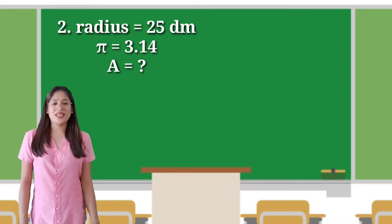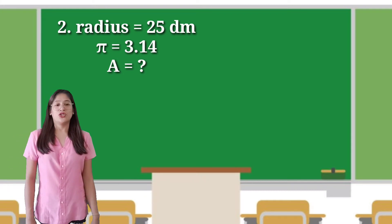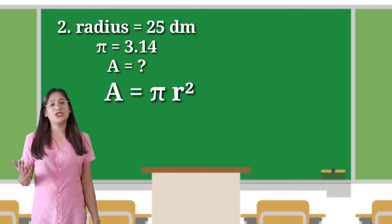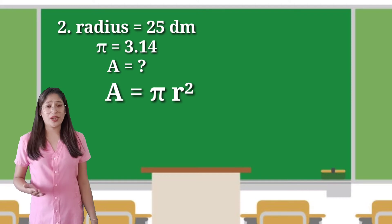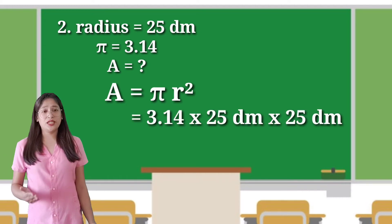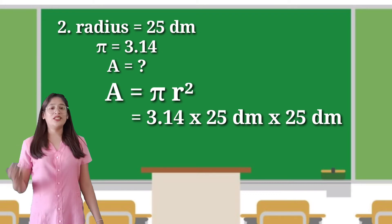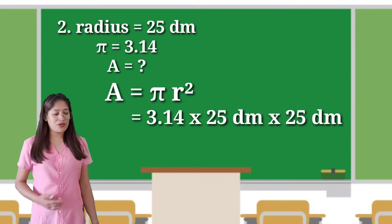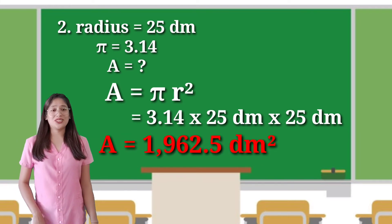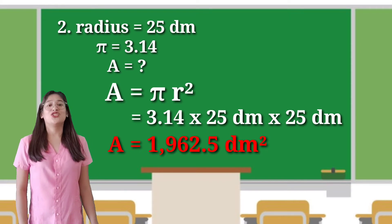Number 2: the given is the radius of 25. Using the formula area equals pi r squared, we will substitute it: 3.14 multiplied by 25, and multiply it again by 25. The answer is 1,962.5 squared.